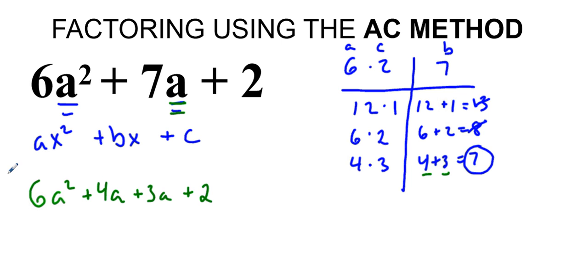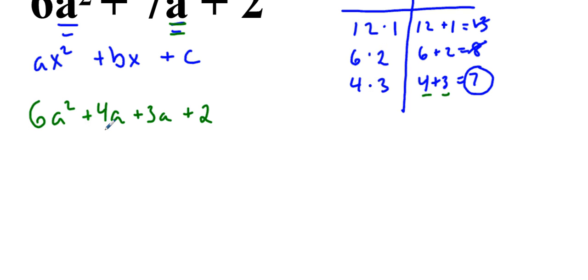From here, we're going to do what's called grouping. Whenever you have a four-term like this, we can add these together, but once again it's going to equal 7a, so we're not going to do that.